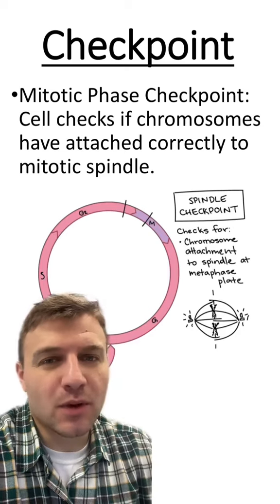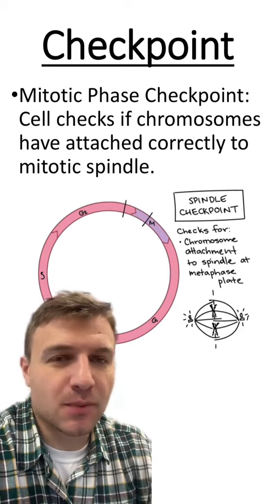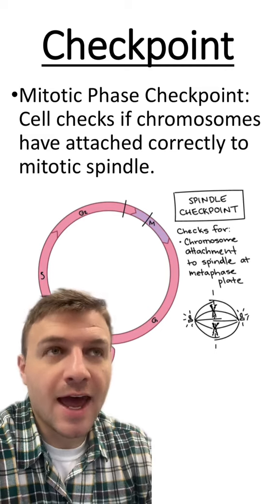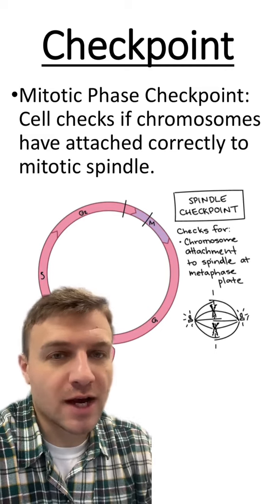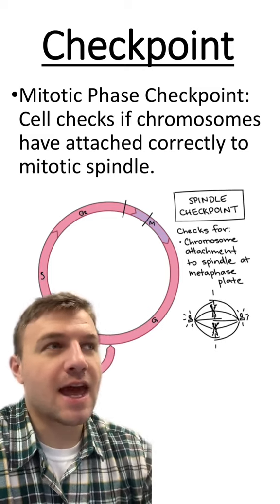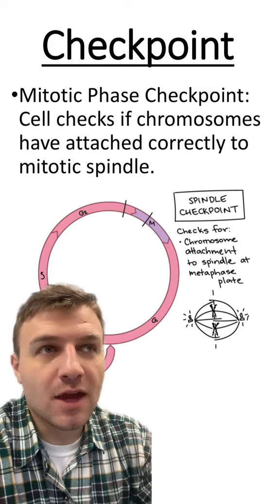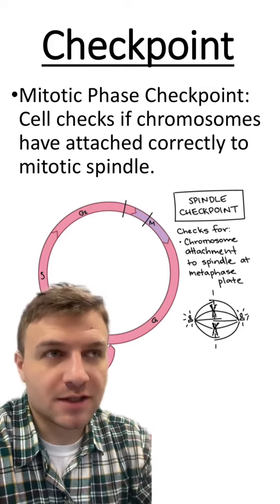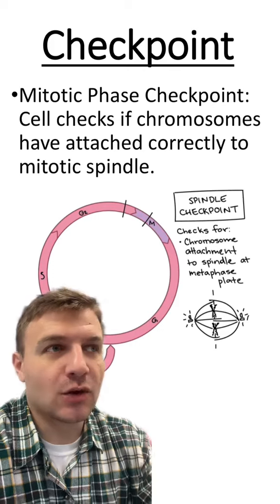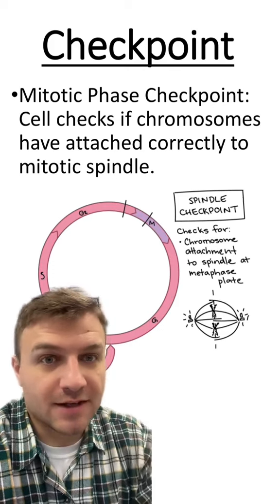The M phase checkpoint is going to occur during mitosis. Proteins within the cell are going to check to make sure the spindle fibers have attached to the chromosomes correctly and that they are aligned along the metaphase plate. If these things haven't happened, the cell will try to fix them, and if they can't fix them, they will stop the cell from continuing. This ensures that the daughter cells will have the correct number of chromosomes and everything they need to develop as a cell.